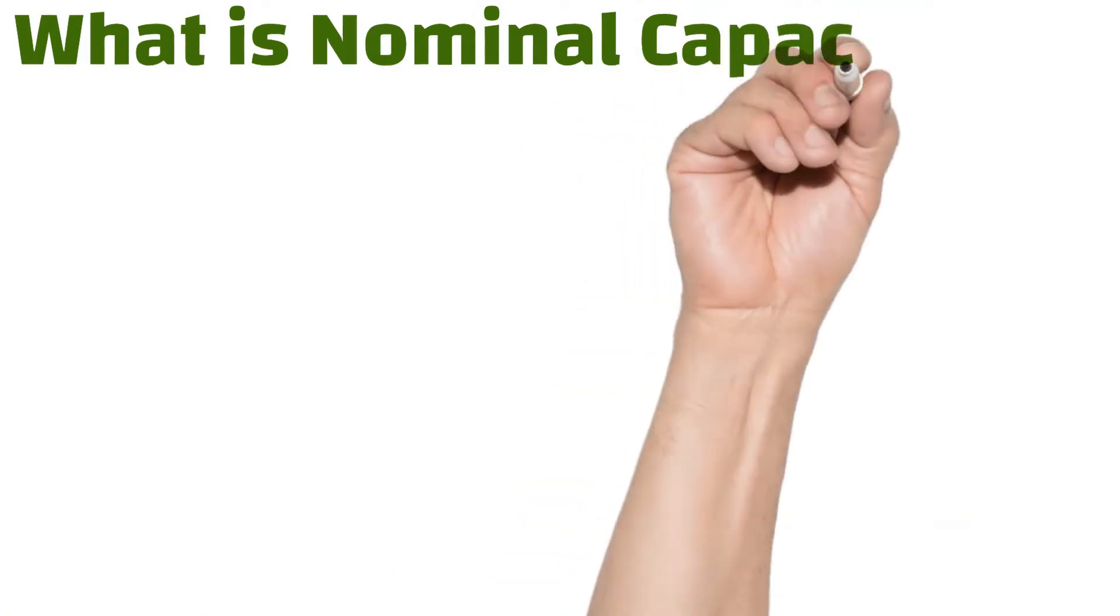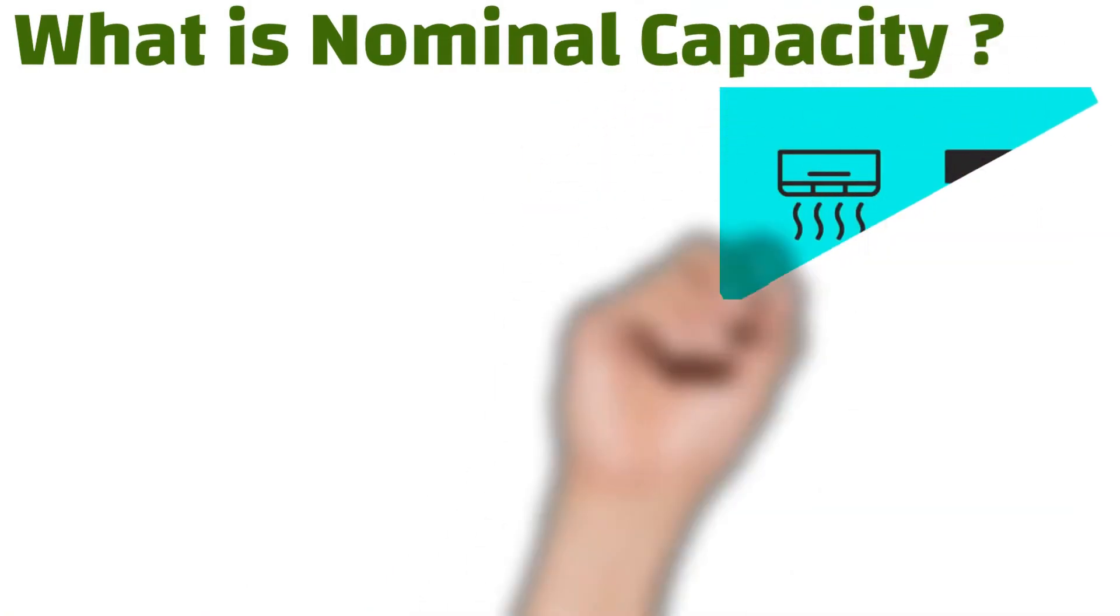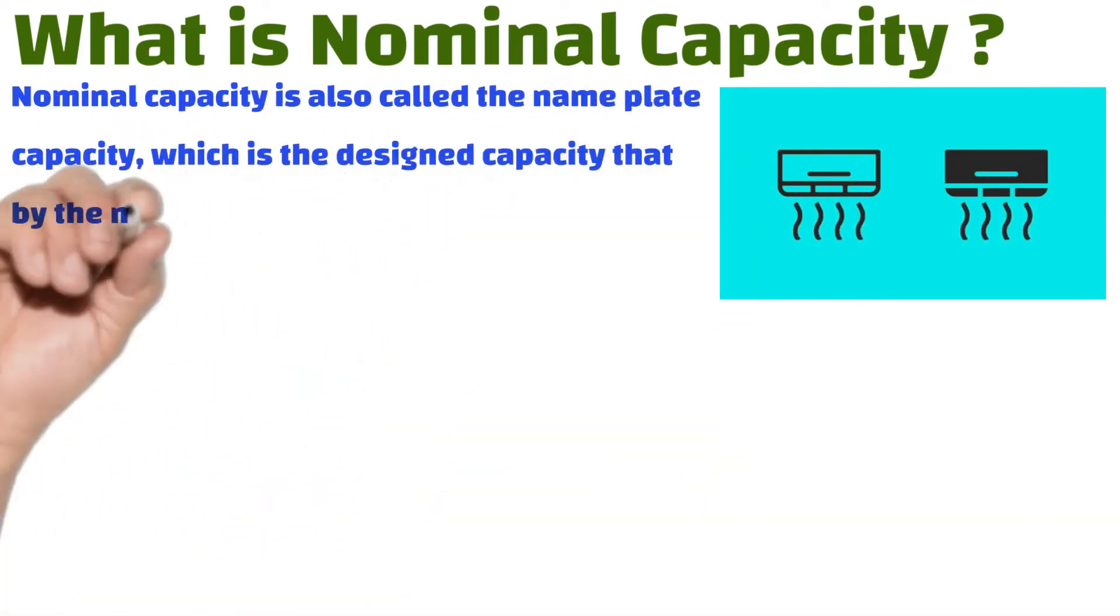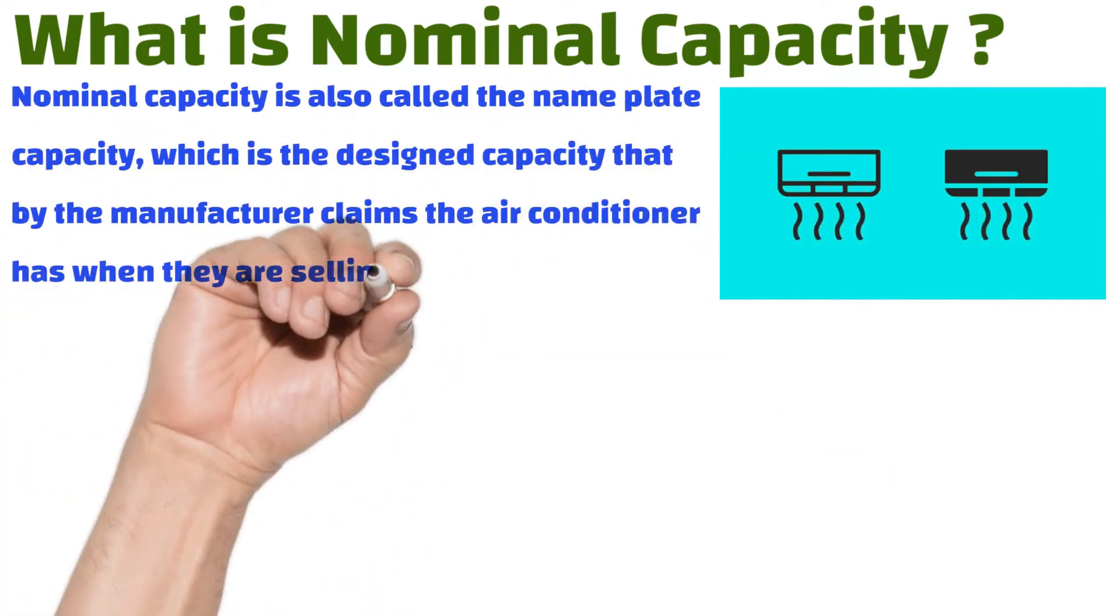What is nominal capacity? Nominal capacity is also called the name plate capacity, which is the design capacity that the manufacturer claims the air conditioner has when they are selling their product.